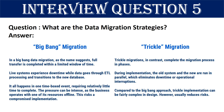Question 5: What are the data migration strategies? There are two: big bang migration and trickle migration. In big bang data migration, full transfer is completed within a limited window of time. Live systems experience downtime while data goes through ETL processing and transitions to the new database — it all happens in one time-boxed event requiring relatively little time to complete, but the pressure can be intense.